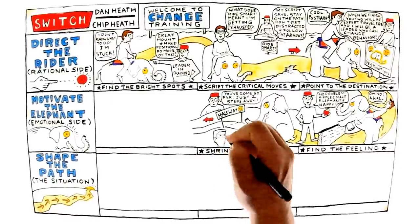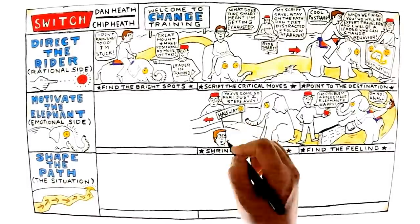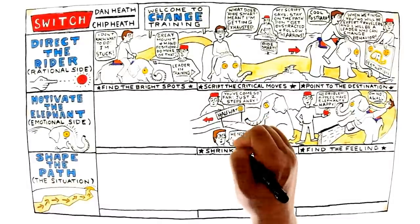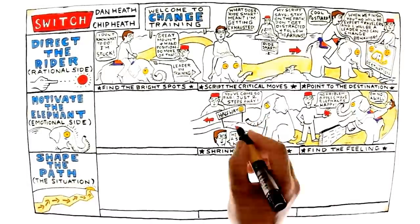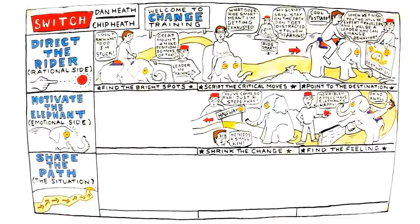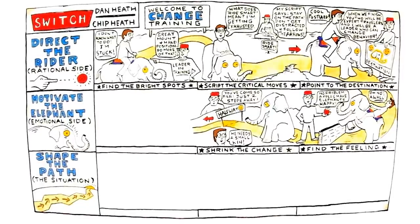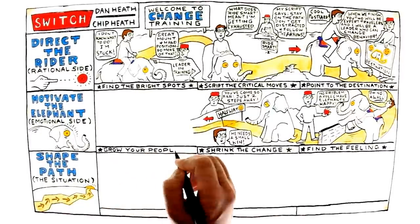The Heath Brothers talk about using small wins, milestones within reach. Select small wins that have two traits. One, they're meaningful, and two, they're within immediate reach.